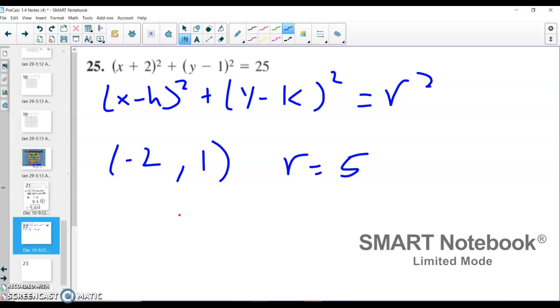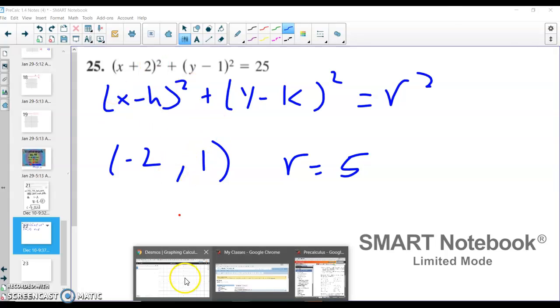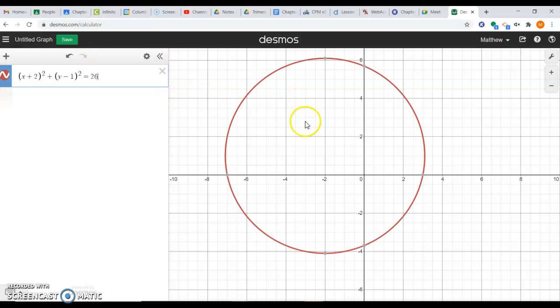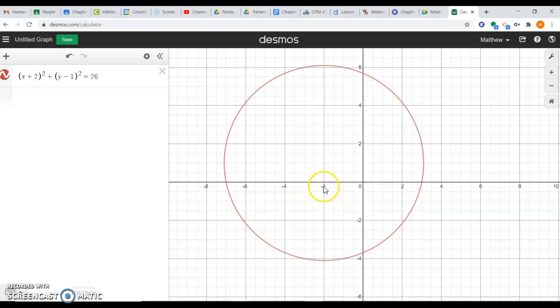All right, and so let's evaluate that by plugging this equation into Desmos and see that circle and how it fails the vertical line test. And so we have (x + 2)² + (y - 1)² = 25. And you can see the center of the circle is at (-2, 1). So right here would be the center of the circle, and that's from my h and my k.